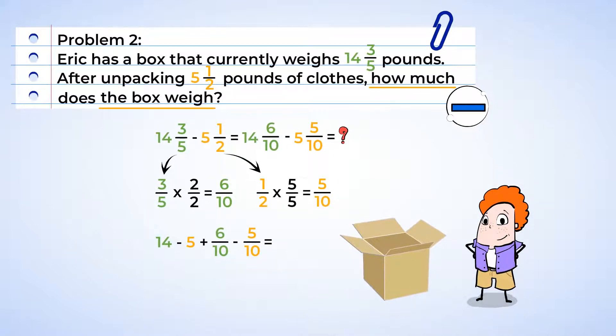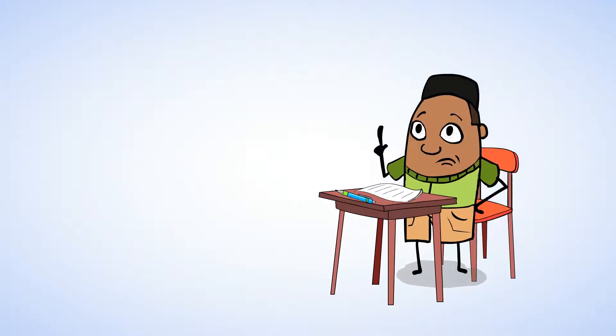Now let's subtract the fractions and the whole numbers one at a time. First, six tenths minus five tenths is one tenth. And now we move over to the whole numbers and we've got fourteen minus five, that's nine. So the box now weighs nine and one tenth pounds. Fabulous work.